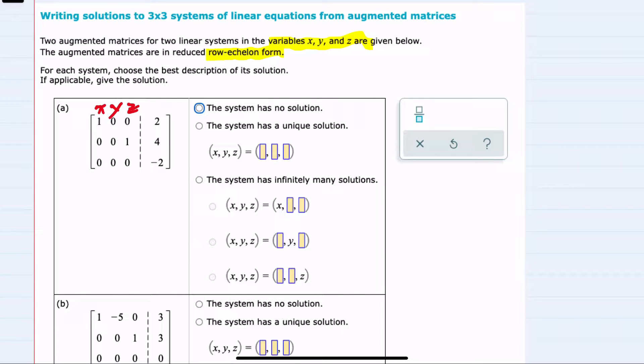Looking at this first example, I can tell that we have just the 1 in the x column, and we have a 2 in the far column. So 1x would equal 2, so we can tell that our x must be 2.